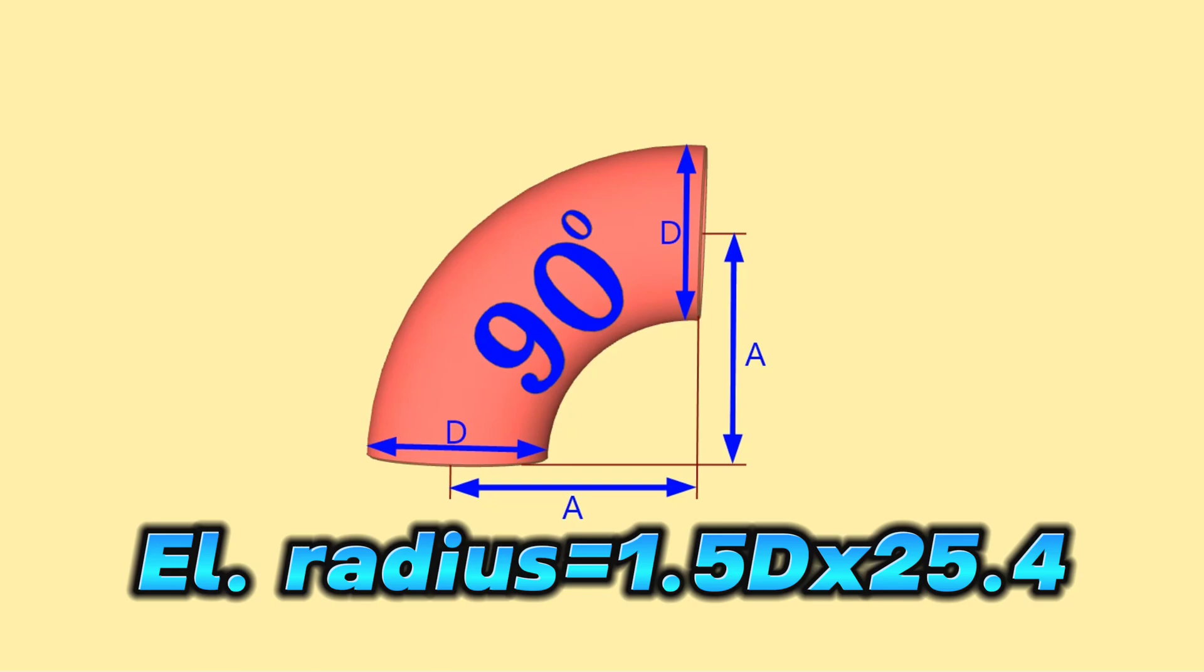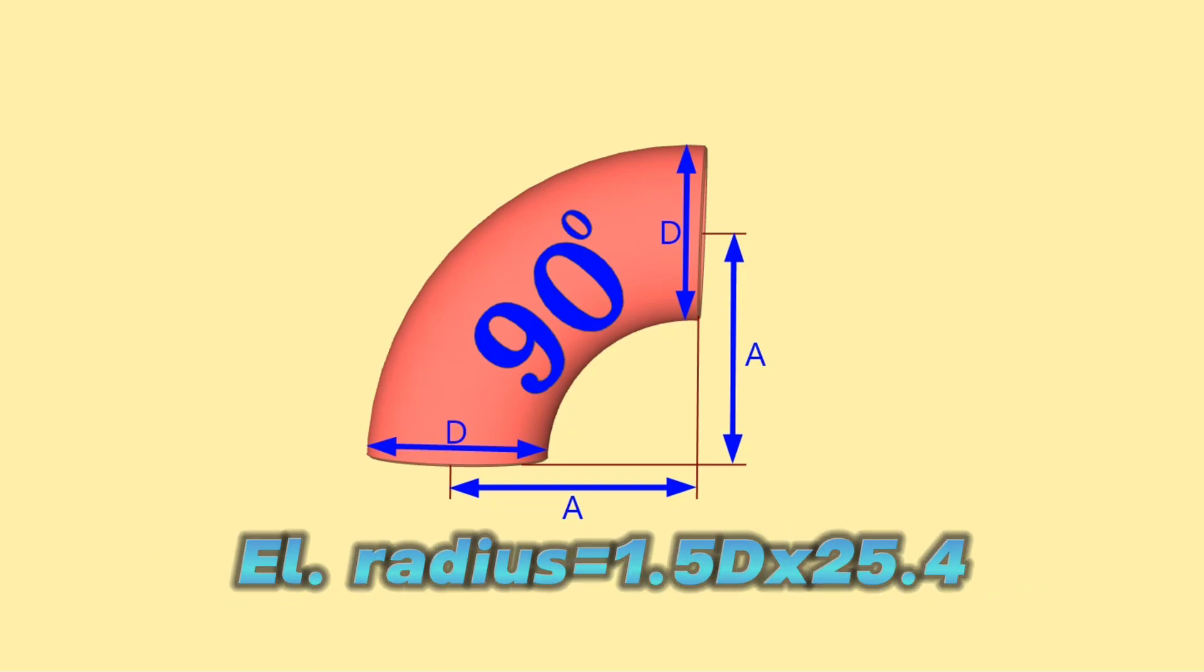D represents the elbow's diameter. Short radius elbow means that the radius of curvature of the elbow is equal to the diameter of the pipe. The curvature radius more than 1.5 times is called bend.